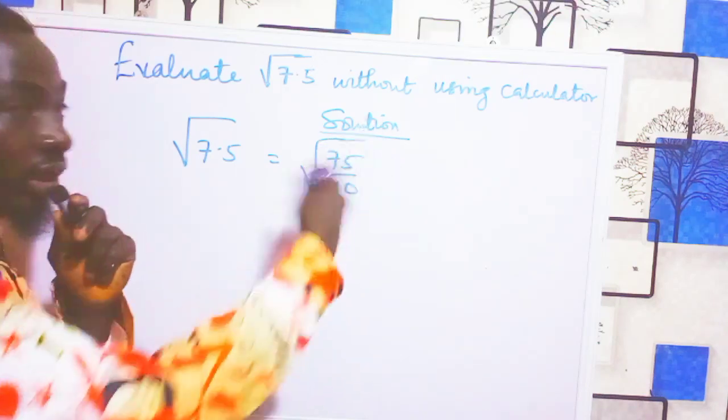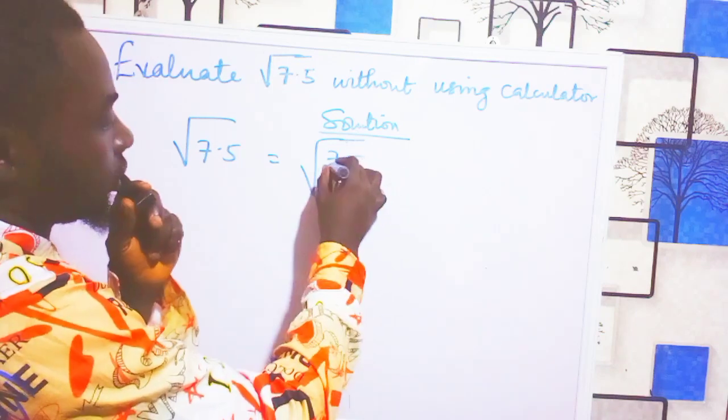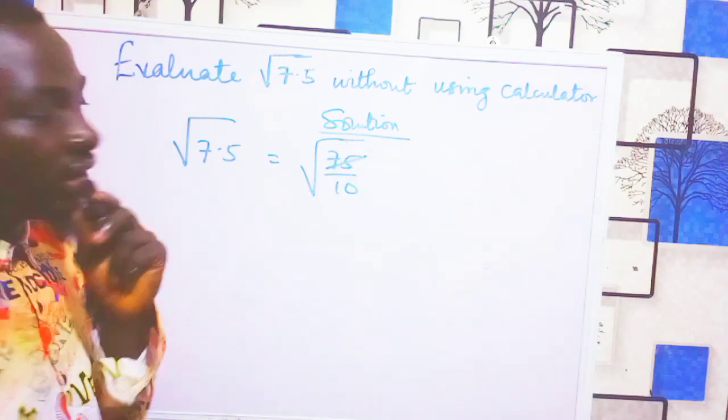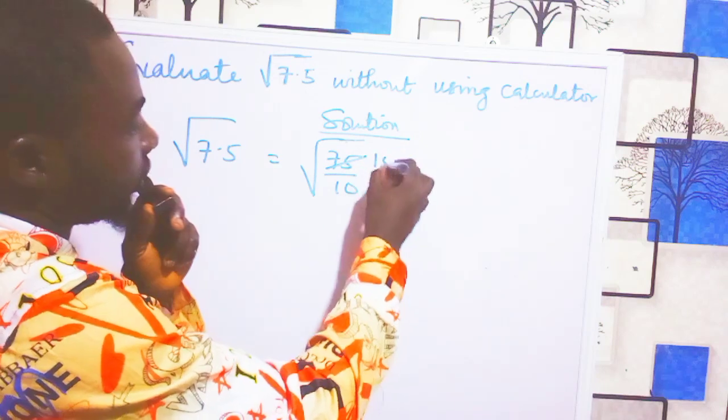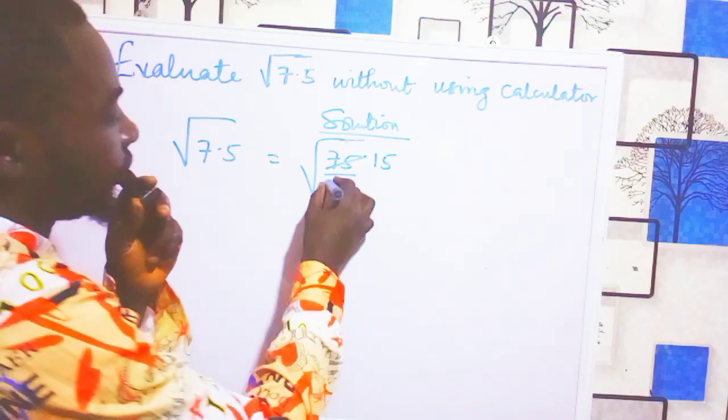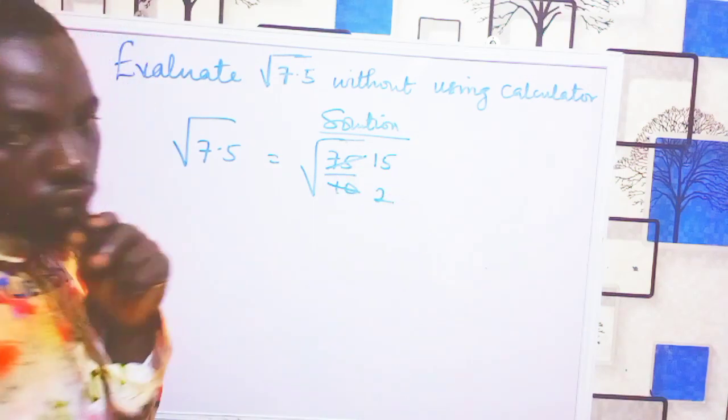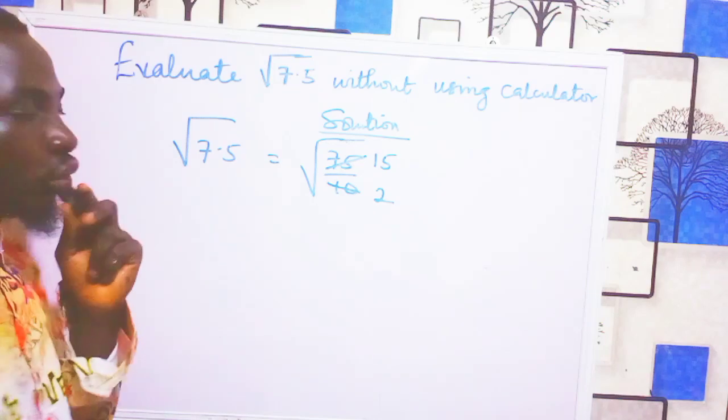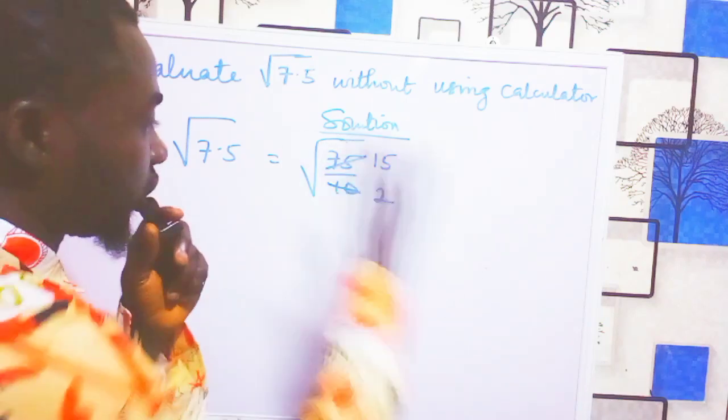Now we can simplify this. 5 can go into the numerator, that's 15. 5 can go into the denominator, that's 2. If nothing can simplify further, you just proceed to the next step.